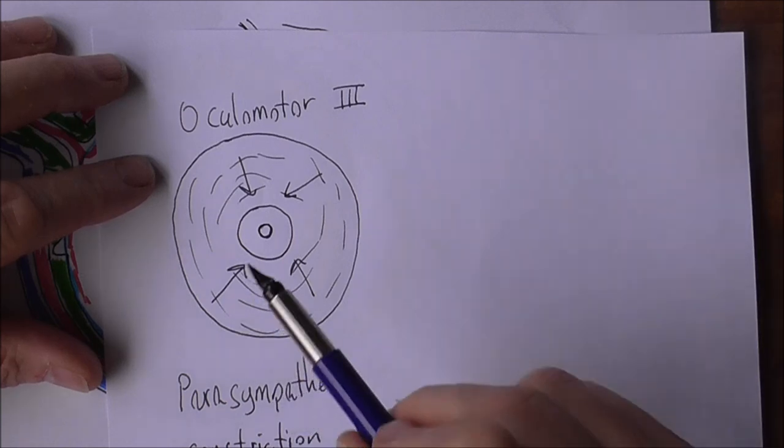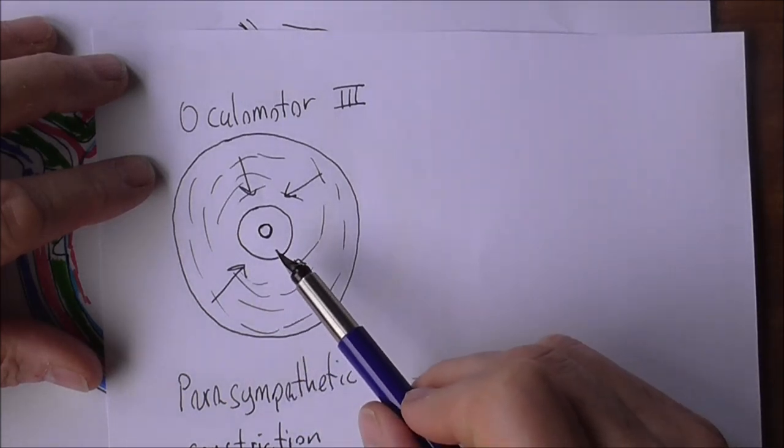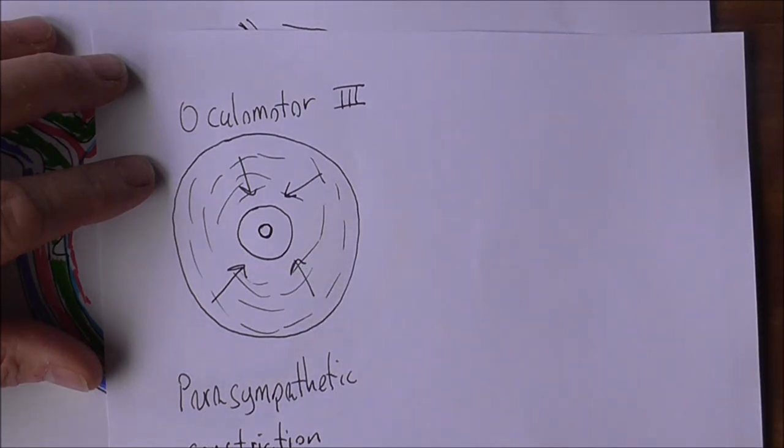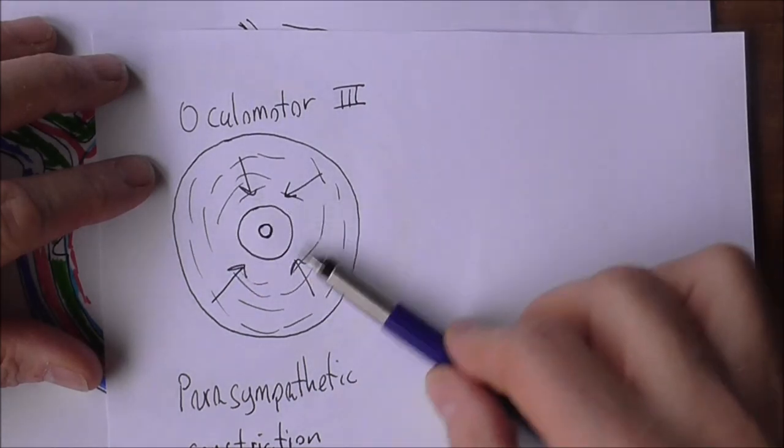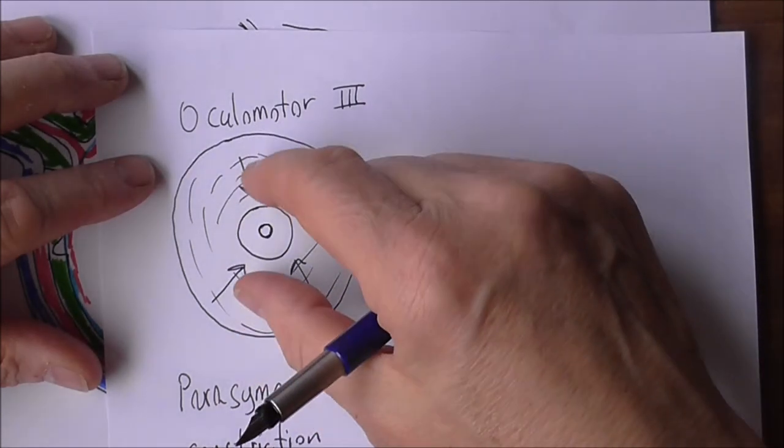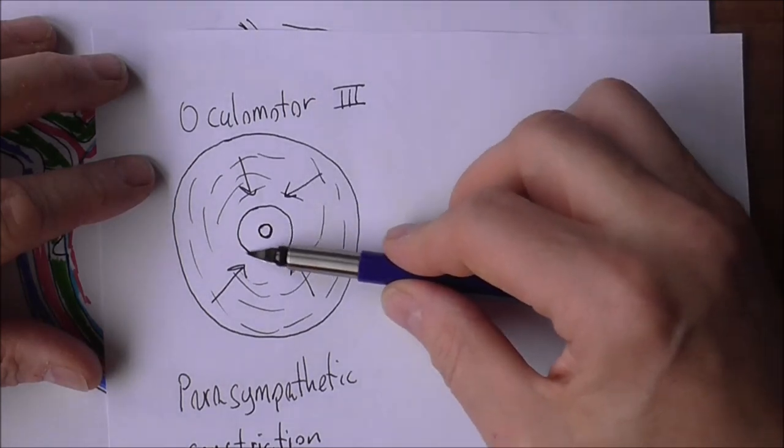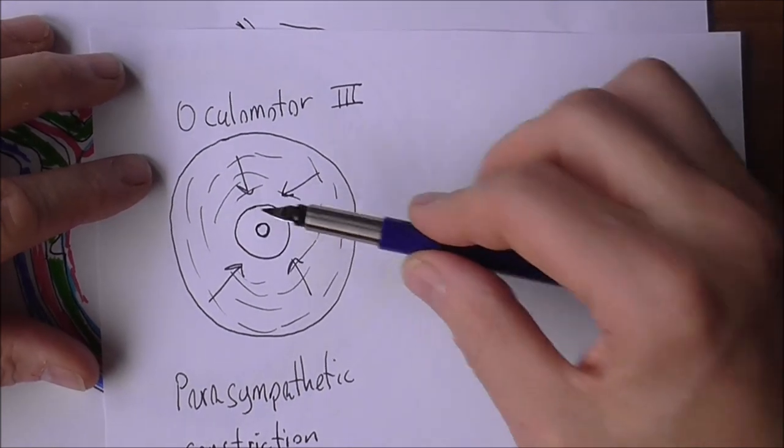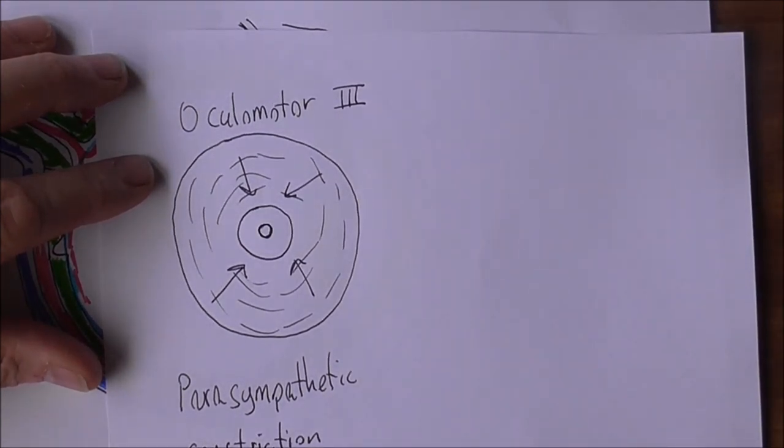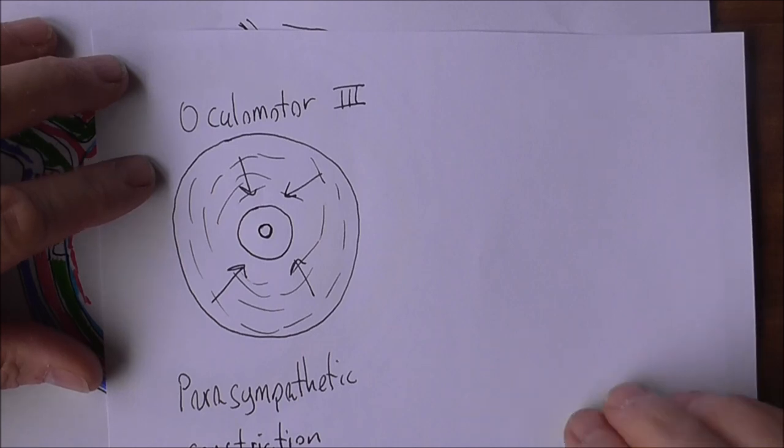And also constriction of the pupil will be brought about if you hold your finger out and bring it closer to someone's eyes and ask them to focus on it. So as we try to focus on close objects, the pupil will also narrow and the lens will thicken. And the reason for this is that if the pupil is more narrow, we'll get better depth of field of our image when we're looking at close-up objects, as photographers amongst you will know.